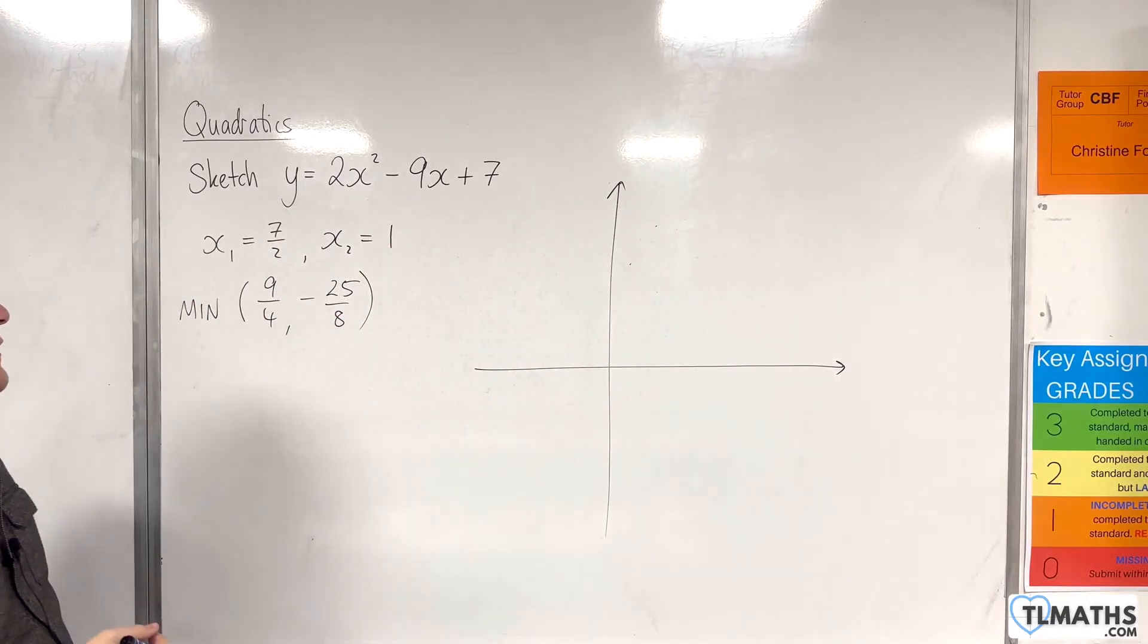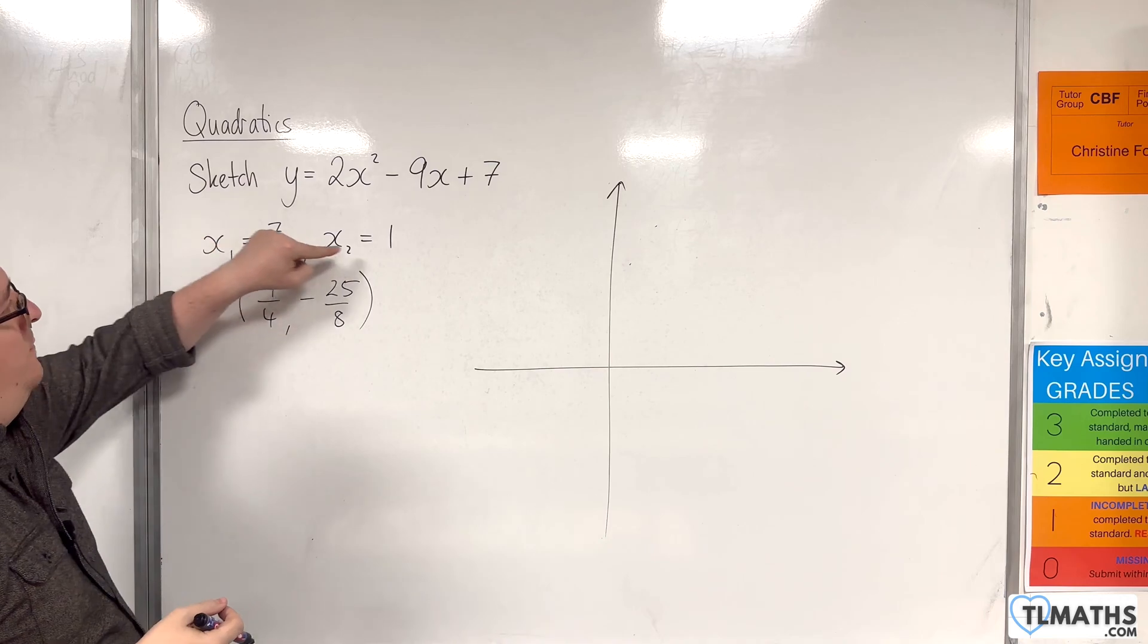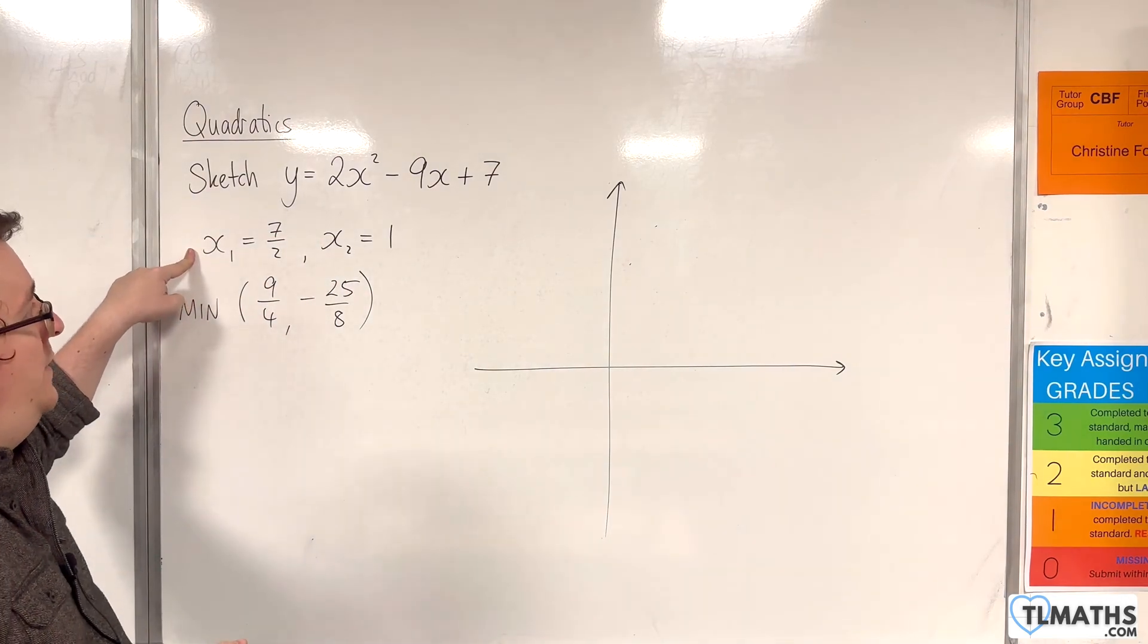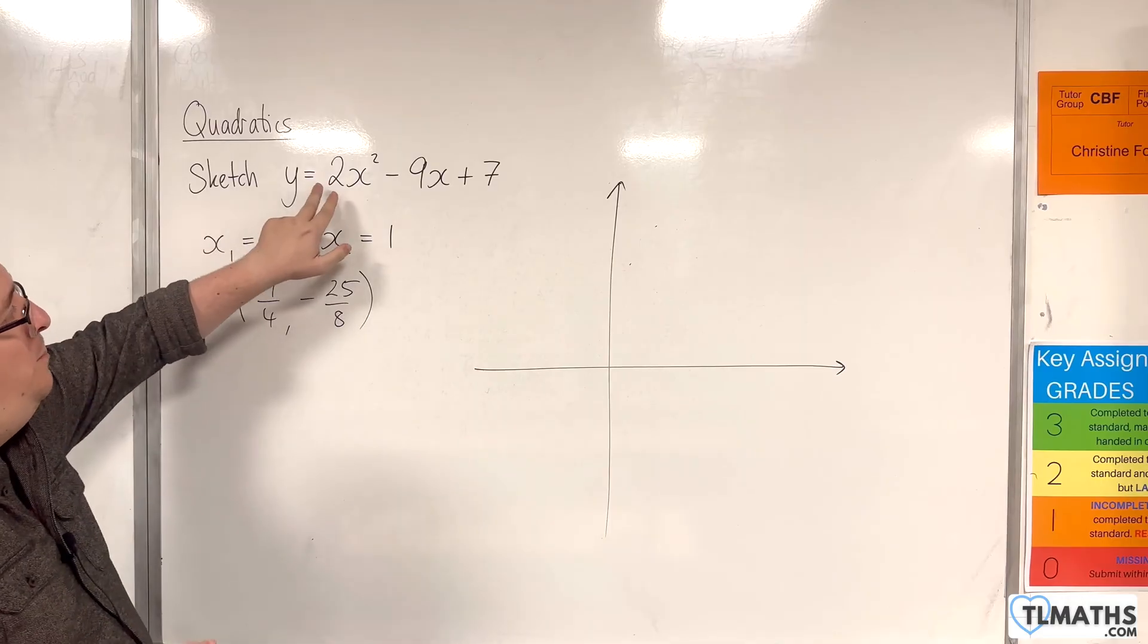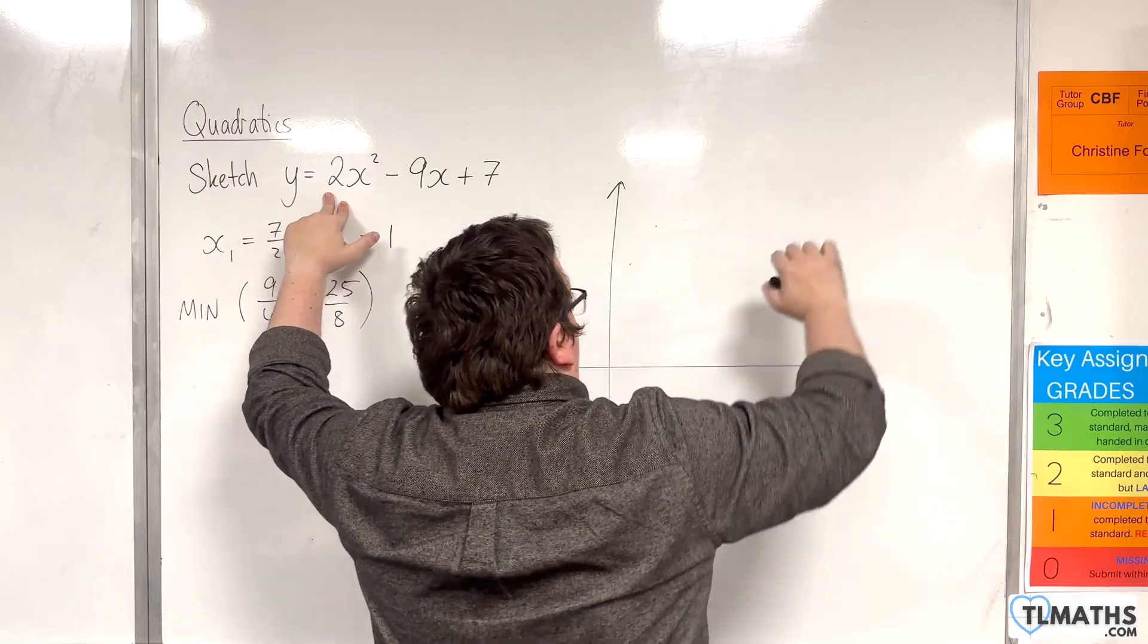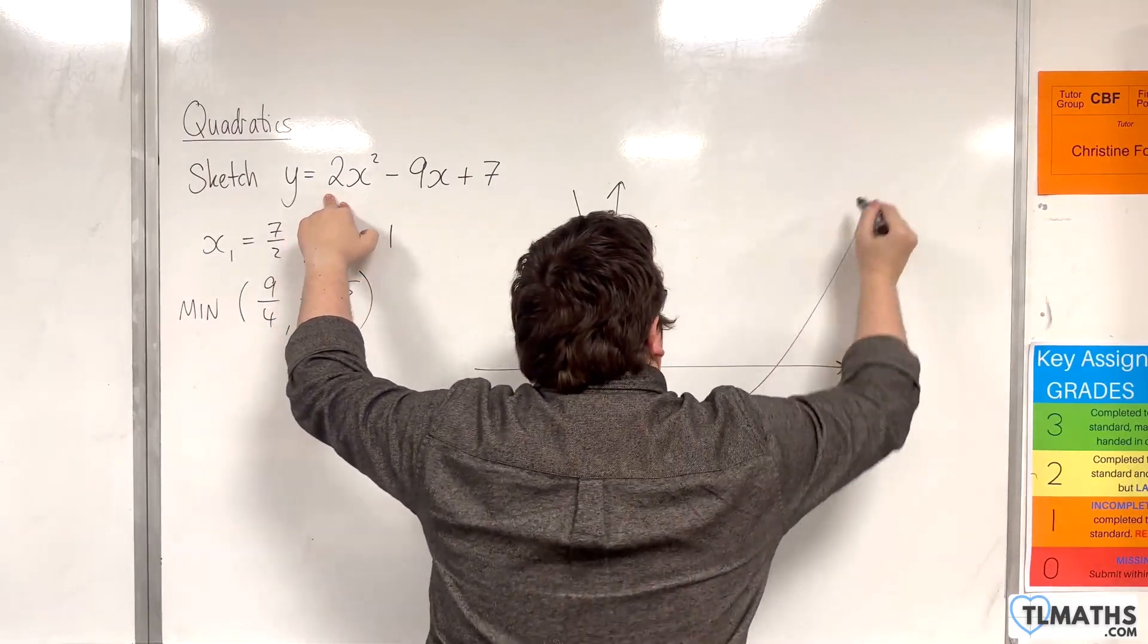So let's draw our axes. This is where the graph will be crossing the x axis. So 1 and 7 halves. It is a positive x squared. So happy face parabola. And so it's going to be going something like this. So let's draw that on.